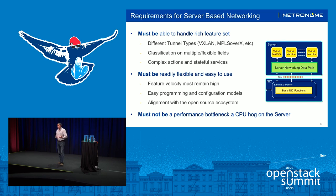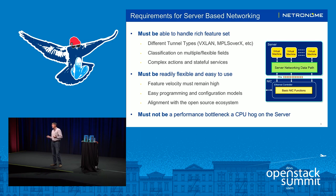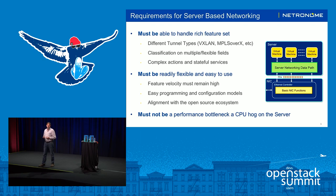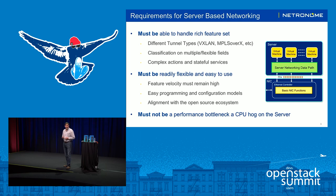The key attributes of the server-based networking data path in an OpenStack environment are the ability to handle these rich features we just discussed, plus future features that may come along. It's very important that the server-based networking data path is flexible and easy to use, so that operators can roll out features quickly — implementing new tunnel types and new features. That implies very simple and easy programming and configuration, and leverage of the open-source ecosystem is critical here as well.